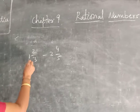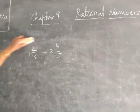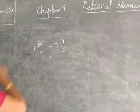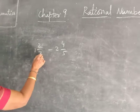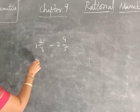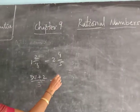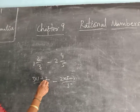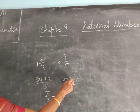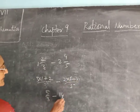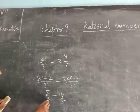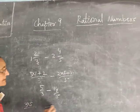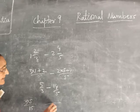Now, suppose the question is given as mixed fractions. How will you subtract the mixed fractions? First, you have to change them into improper fractions. For example: 1 and 2 by 3 becomes 3 into 1 plus 2 over 3, which is 5 by 3. Then 2 and 4 by 5 becomes 5 into 2 plus 4 over 5, which is 14 by 5. These two numbers have different denominators, so you have to take LCM. The LCM is 15.